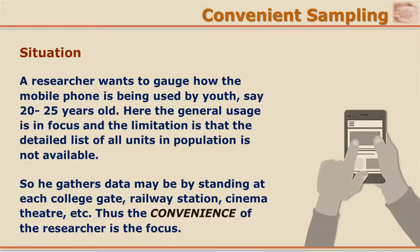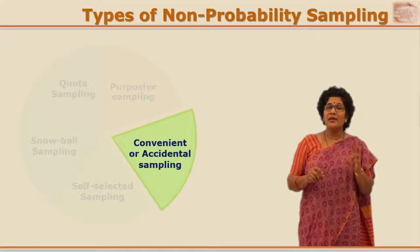In another research situation, the researcher is trying to study how youth — say students of age 20 to 25 years — are using mobile phones. This is a very large and scattered population, so it will be very difficult for the researcher to prepare a list and select the sample using randomization. In this case, the researcher taps locations like a cyber cafe, cinema hall, college, or mall, and then collects data from the youth visiting such locations, gathering information about how they use mobile phones. The focus here is the researcher's convenience.